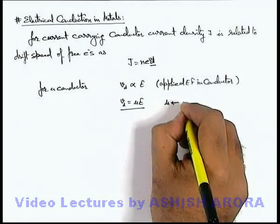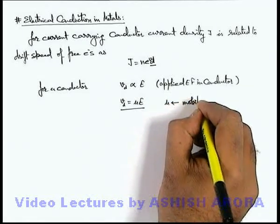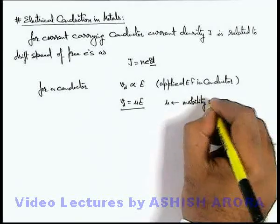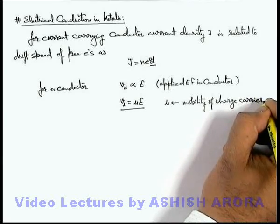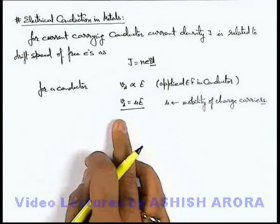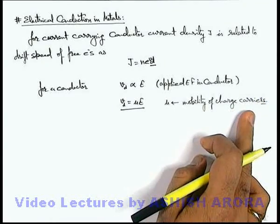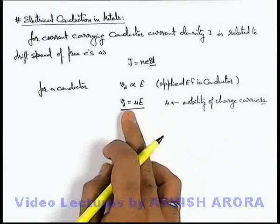And this μ is called mobility of charge carriers. In case of metals, charge carriers are only free electrons, so this is termed as mobility of free electrons.